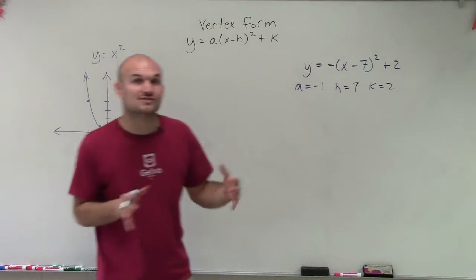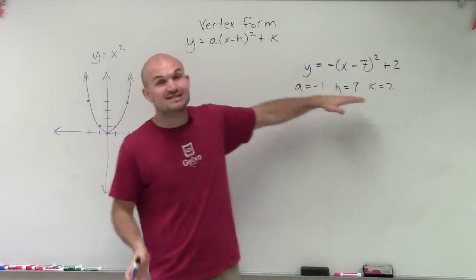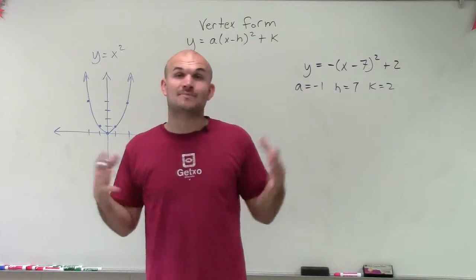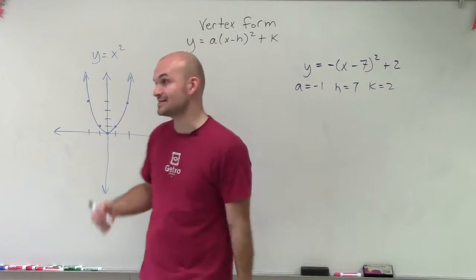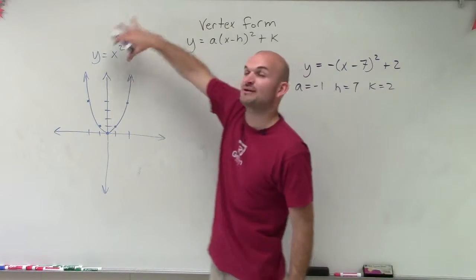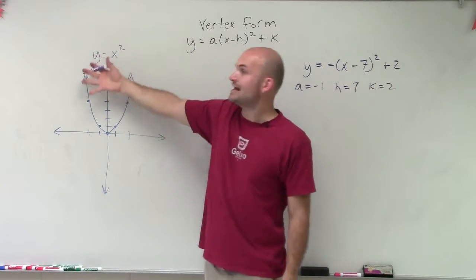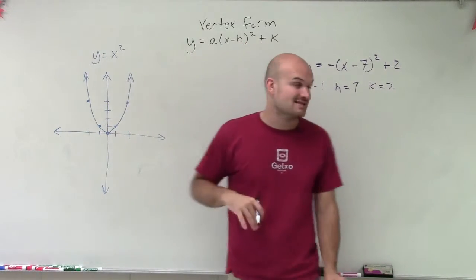So remember, a is going to tell us if we're going to have any dilations. Which in this case, since my a is equal to 1, I'm not going to dilate my graph at all. However, it is negative, so therefore the graph is going to be reflected over the x-axis. And when I talk about the graph, I'm talking about the parent function. This parent function is now going to be reflected over my x-axis.